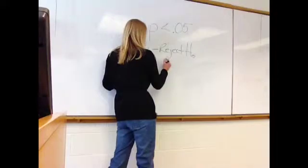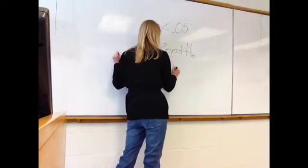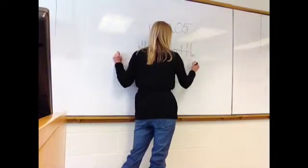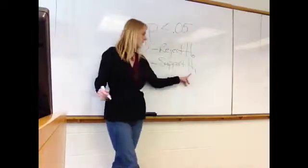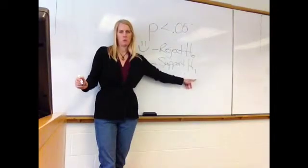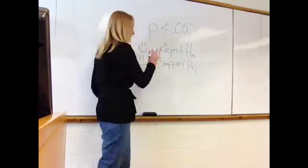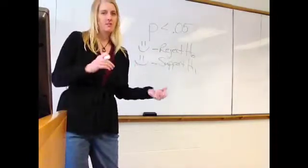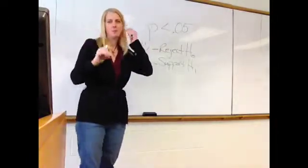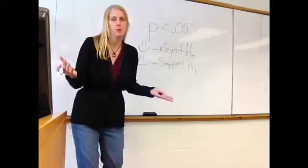That's the same thing as saying you support the alternative hypothesis. For that, I just put a capital H with a little sub 1 to denote my alternative. That's great. And that's if your p-value is less than alpha. Alpha is the cutoff you put. Alpha is usually 0.05.